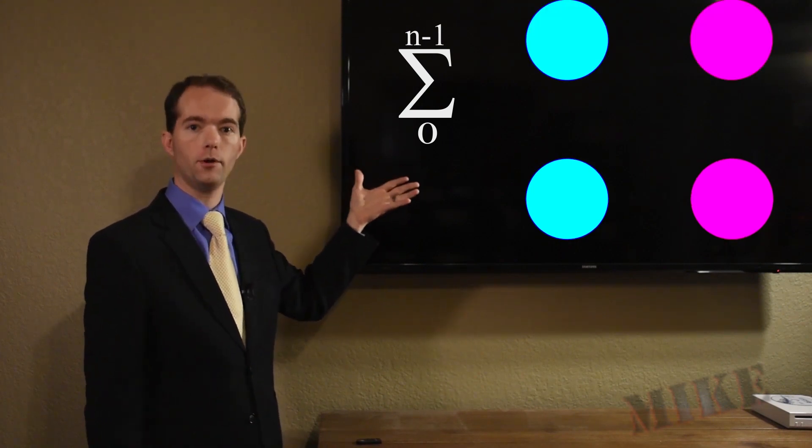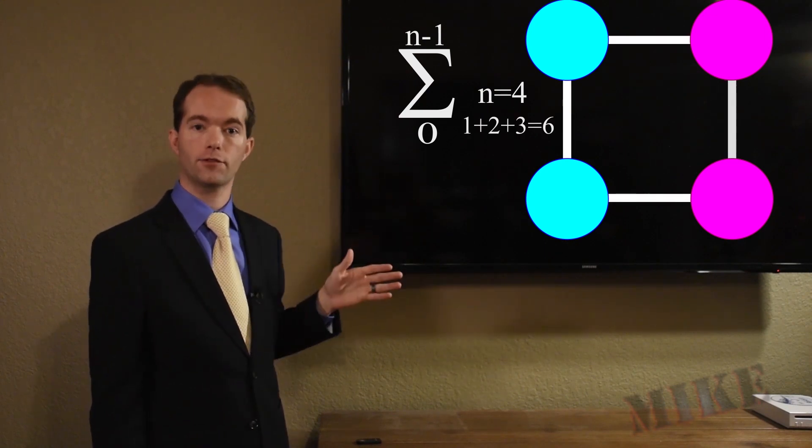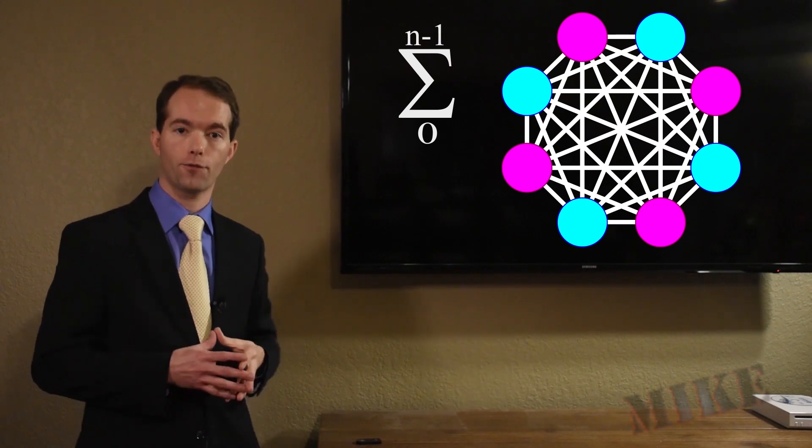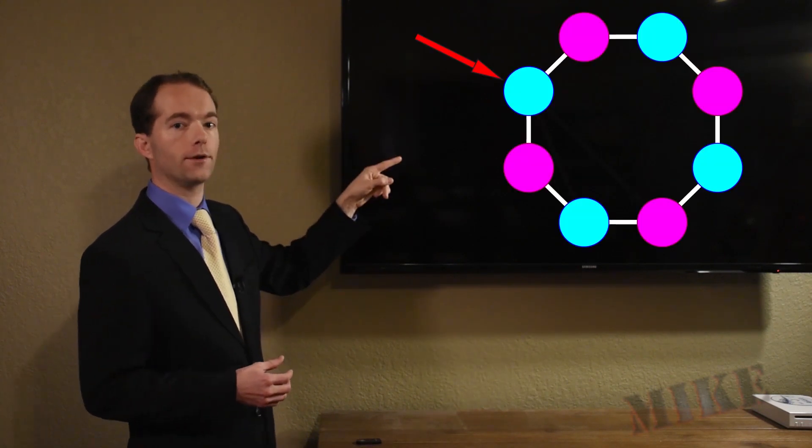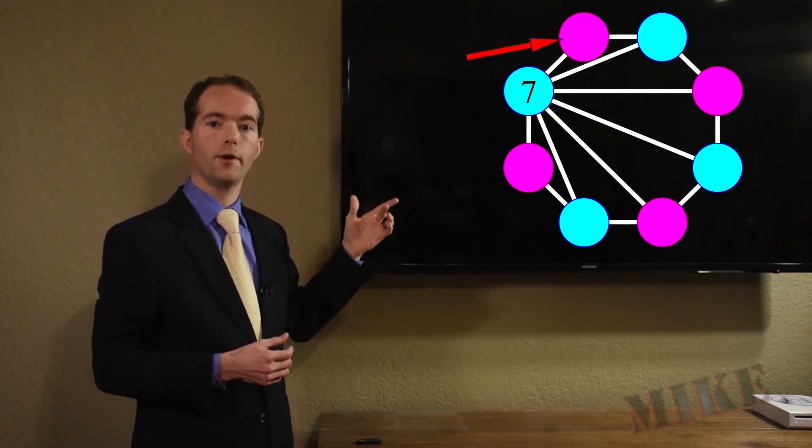So with four people, n equals 4, n minus 1 is 3, and 1 plus 2 plus 3 is 6. When you get to 8, it's hard to count. So here's how I figured out the formula. I started at this point and counted all his relationships, which was 7. The second person also has 7 relationships, but the one with the first person can't be double counted.